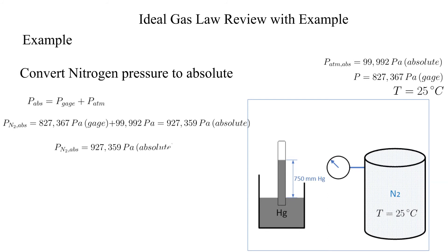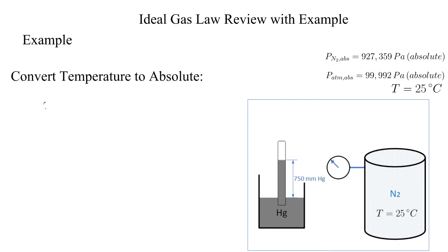Now that we've calculated the atmospheric pressure, let's convert the pressure of the nitrogen from gauge to absolute. Next, we convert the temperature from degrees Celsius to absolute temperature, in this case, Kelvin.